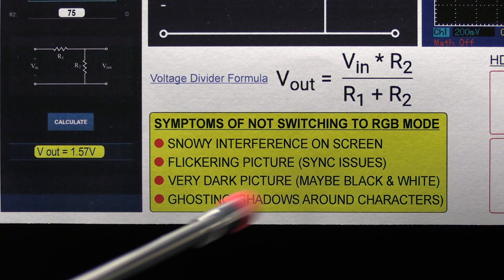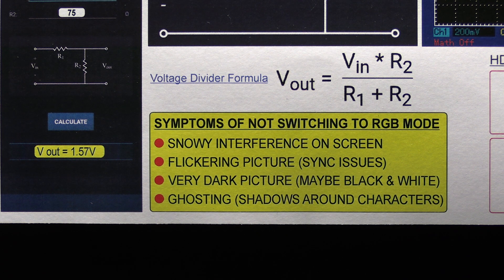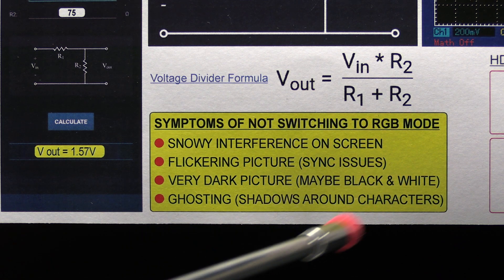A flickering picture, which is sync issues, that the screen may flicker on and off permanently, or it may come on for a few seconds and then go off and so on. You may get a very dark picture, which is probably a black and white screen as well.